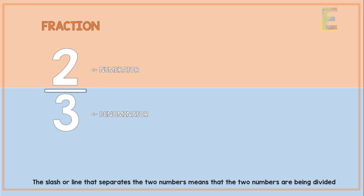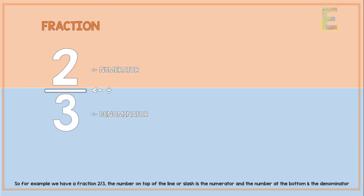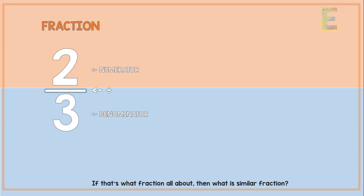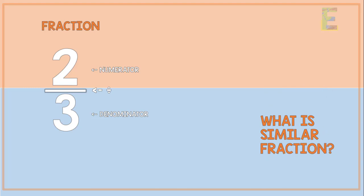The slash or line that separates the two numbers means that the two numbers are being divided. So for example we have a fraction 2 over 3 — the number on top of the line or slash is the numerator and the number at the bottom is the denominator. If that's what a fraction is all about, then what is a similar fraction?